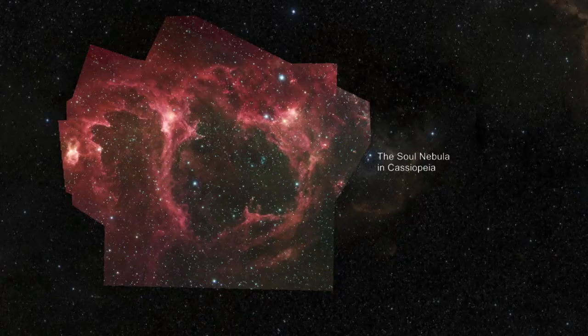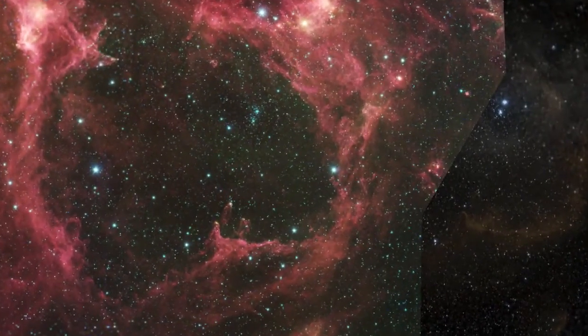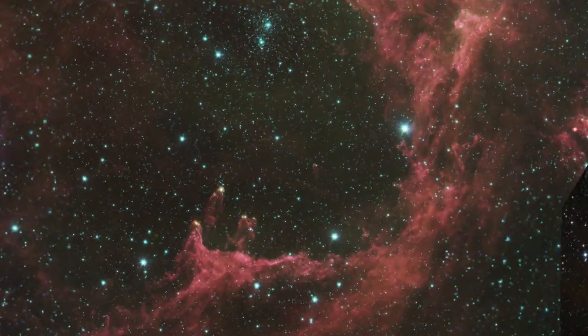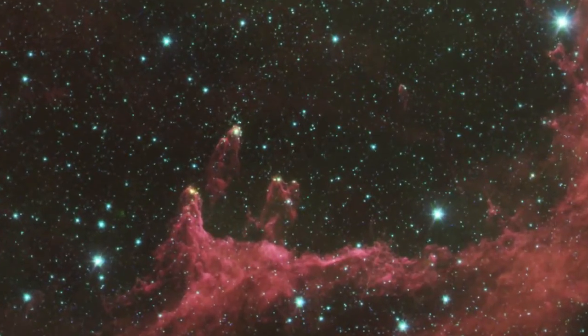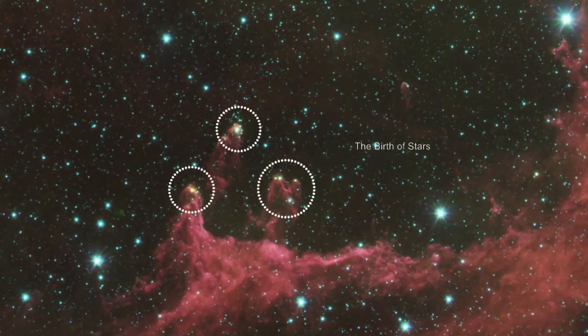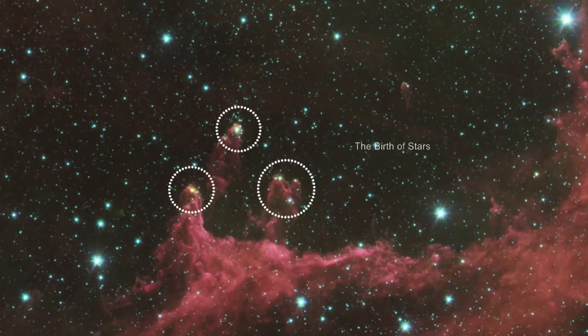The Sol Nebula in Cassiopeia is the site of the W5 star-forming region, where we can actually observe very young stars being born. These three circled regions are stars being formed, surrounded by a huge amount of dust.